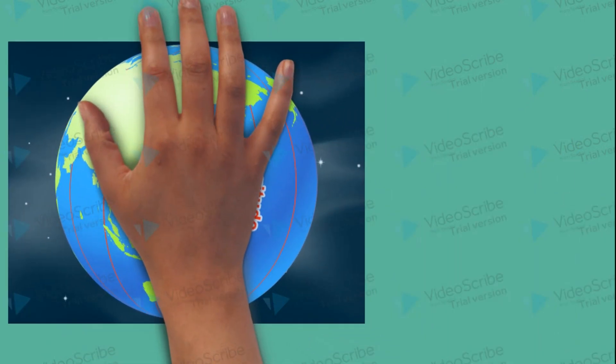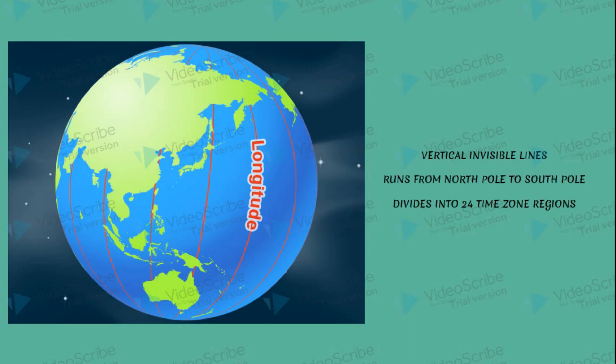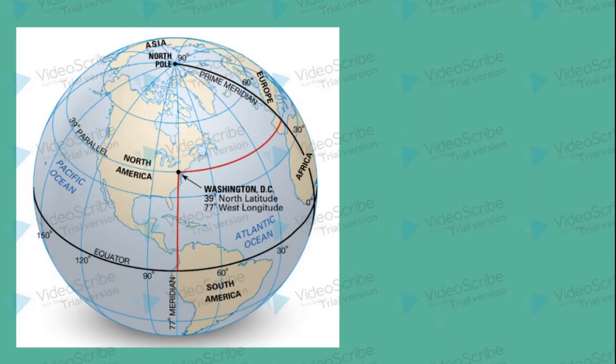For the longitude lines, these are vertical lines. Earth is known as North Pole and South Pole. Earth is divided into 24 different time zones. In the longitude lines, we will learn the history of the meridians.